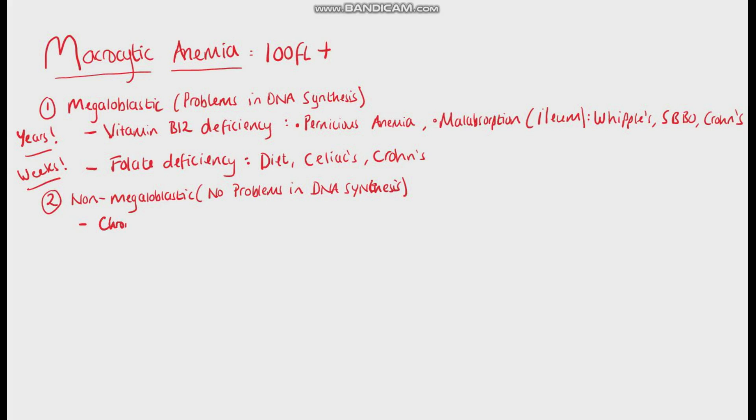Non-megaloblastic anemia includes chronic alcohol use, liver disease, hypothyroidism, myelodysplastic syndromes, and sometimes hemolysis and hemorrhage.